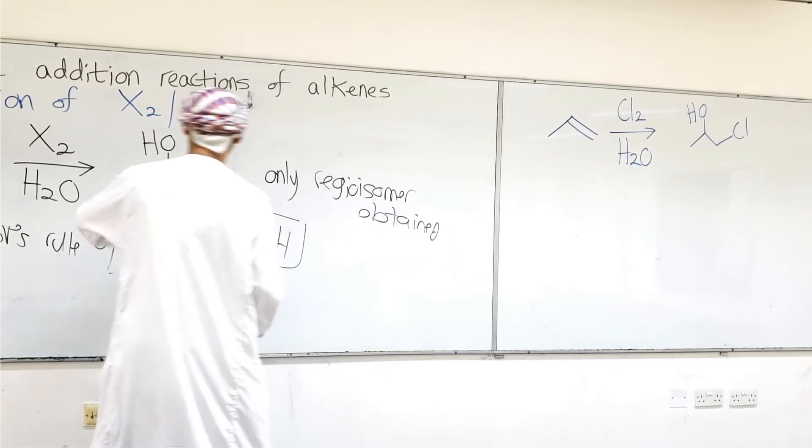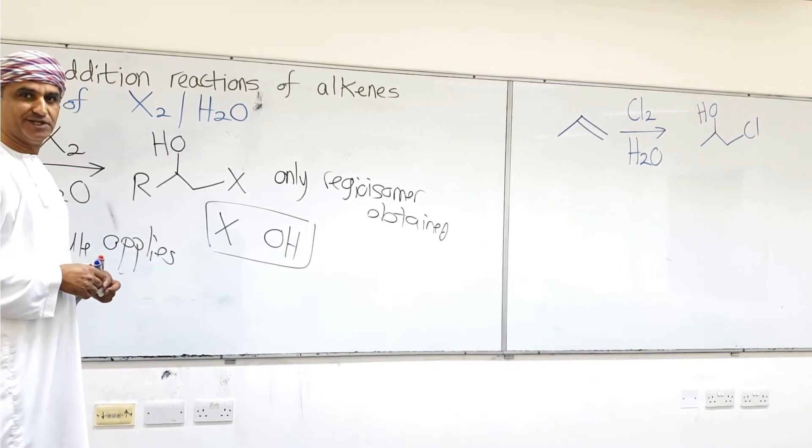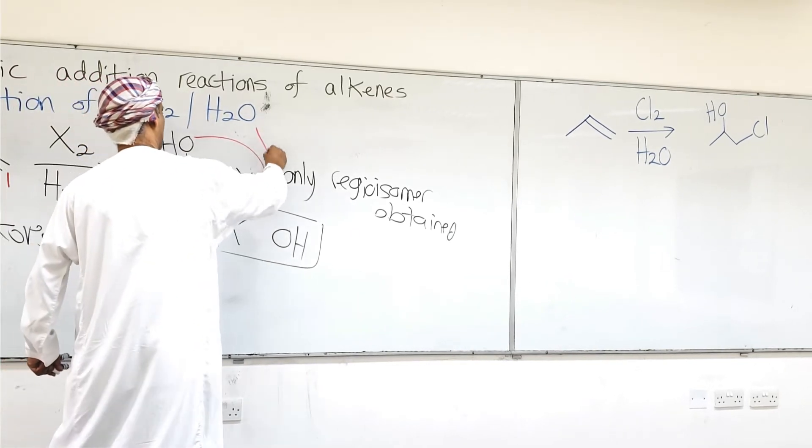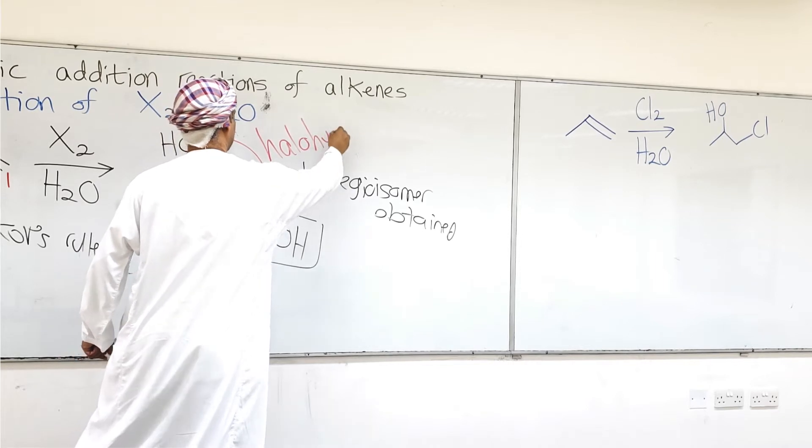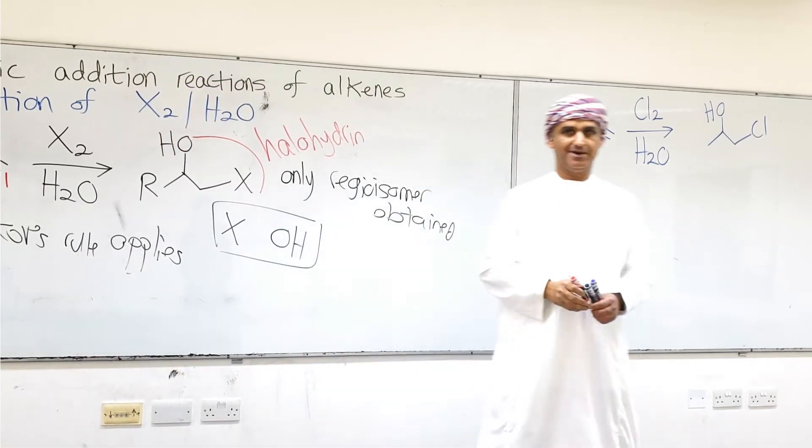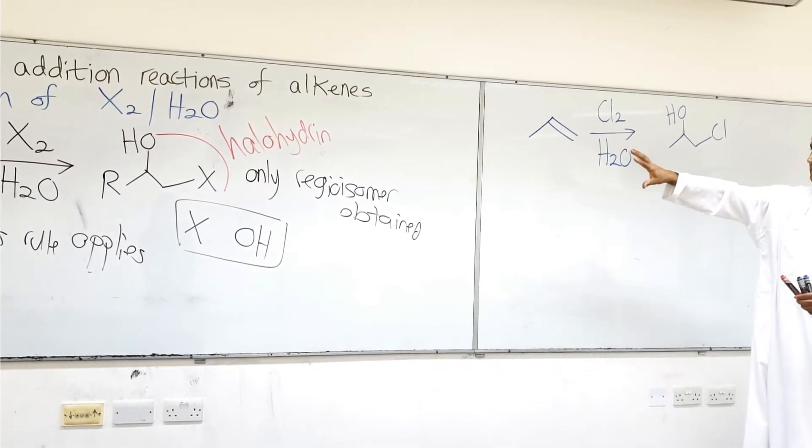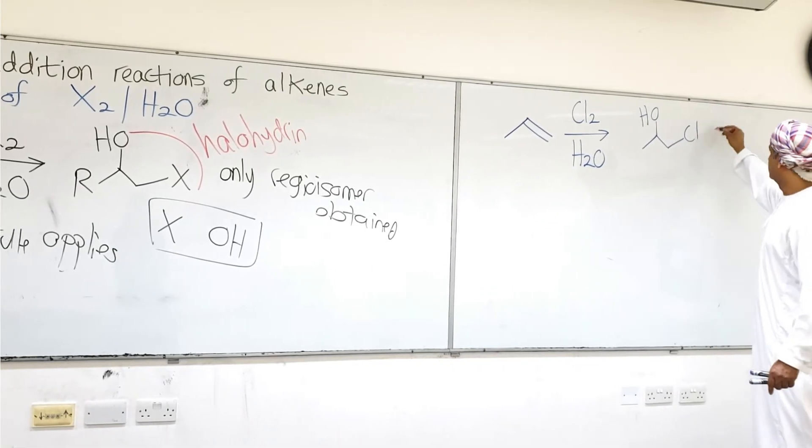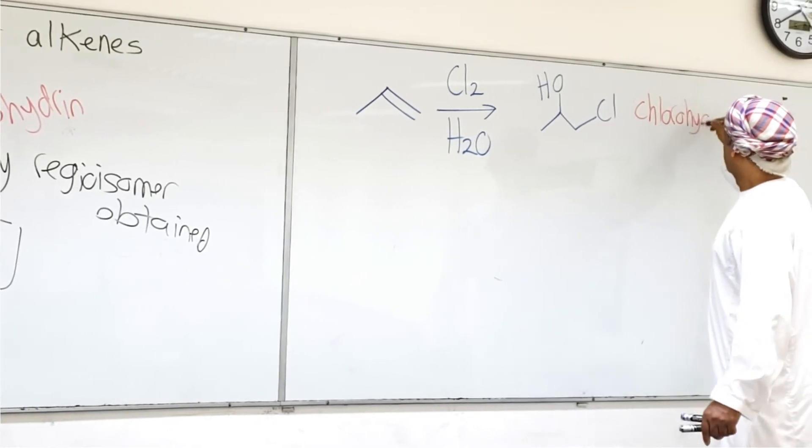Okay, and this regio isomer, by the way, just to give an additional note, these kinds of compounds are called halo hydrins. This is a halo hydrin. Basically, a halo hydrin is a compound that has X and OH. This is the chloro hydrin in this case specifically, by the way.